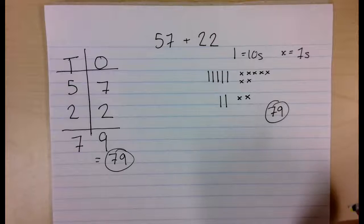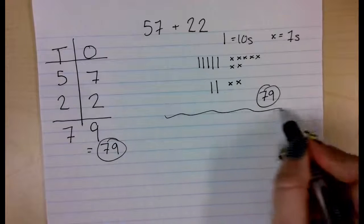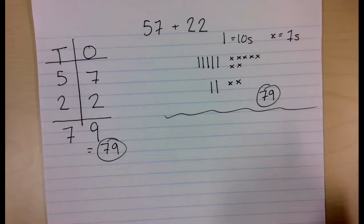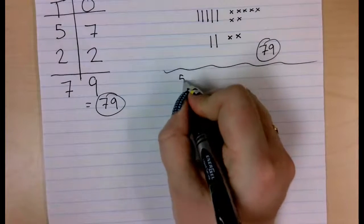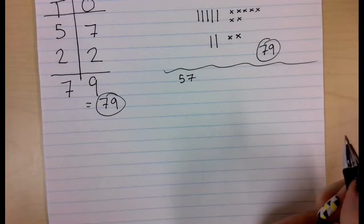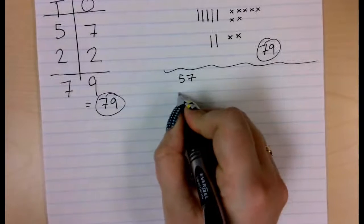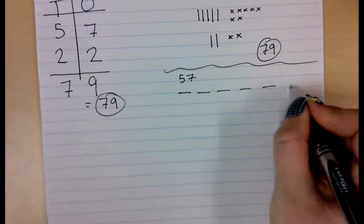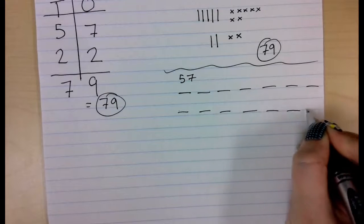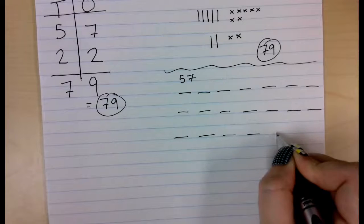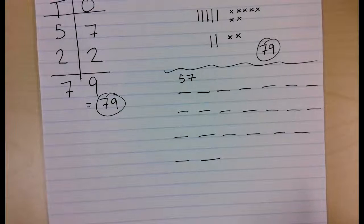Alright, I am going to save the picture one for last, because that one is the worst for what we are doing with this type of question. But we can still do counting on if we want to. I would do this on your fingers instead of on a piece of paper, because that is a lot of writing. But I am going to show you what it would look like on my paper. So I have 57, and I need to add 22.